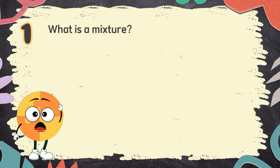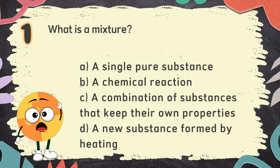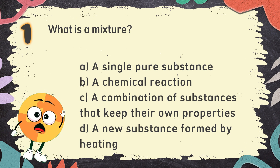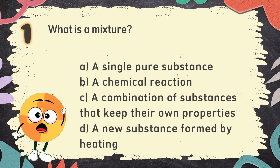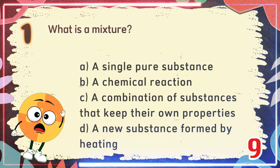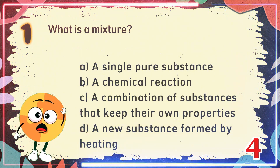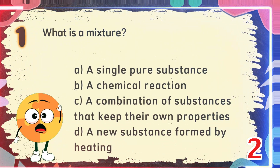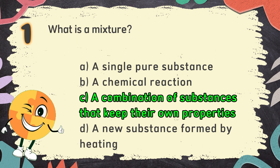Number 1. What is a mixture? The choices are: A. A single pure substance. B. A chemical reaction. C. A combination of substances that keep their own properties. D. A new substance formed by heating. The correct answer is C: A combination of substances that keep their own properties.